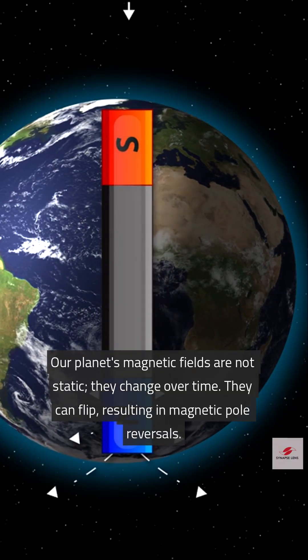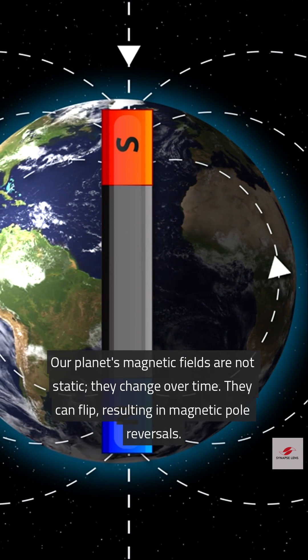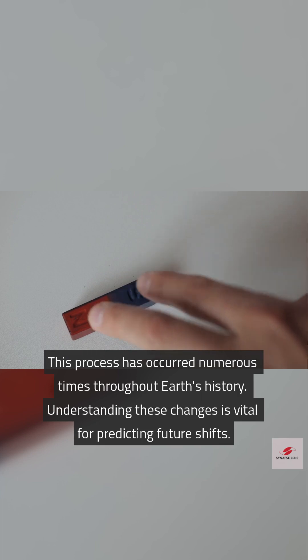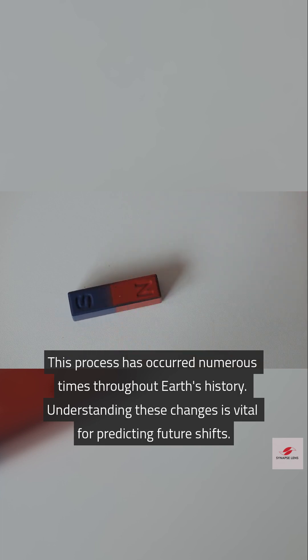Our planet's magnetic fields are not static. They change over time. They can flip, resulting in magnetic pole reversals. This process has occurred numerous times throughout Earth's history. Understanding these changes is vital for predicting future shifts.